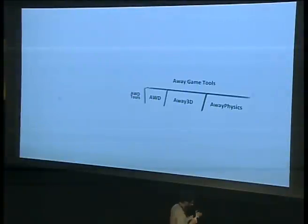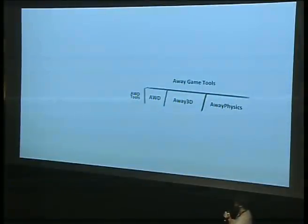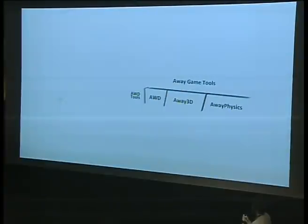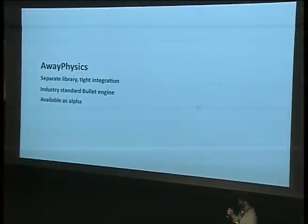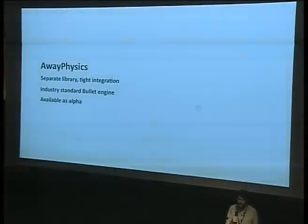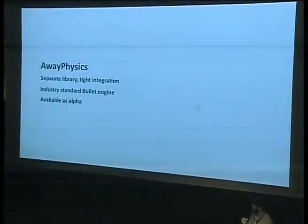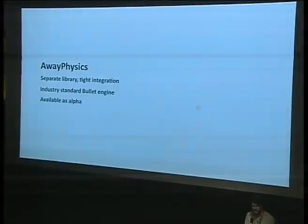Away3D is the rendering engine we've been building and maintaining for about five years. We also have a file format called AWD, and tools like a Blender exporter for that format. We have a new thing called Away Physics, and another new thing called the Game Tools that builds on all of these. Away Physics is a separate library but tightly integrated — it's based on the Bullet engine, which is open source, used in Blender and also in movies like 2012 and games like Grand Theft Auto.